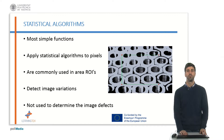The statistical algorithms are the most basic algorithms and consist on applying statistical functions to the image pictures. They are commonly used in area arrays to acquire information about the variations on the image, but are rarely used to classify the pieces under study.